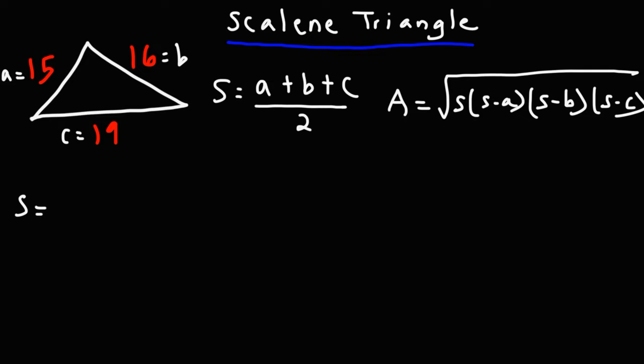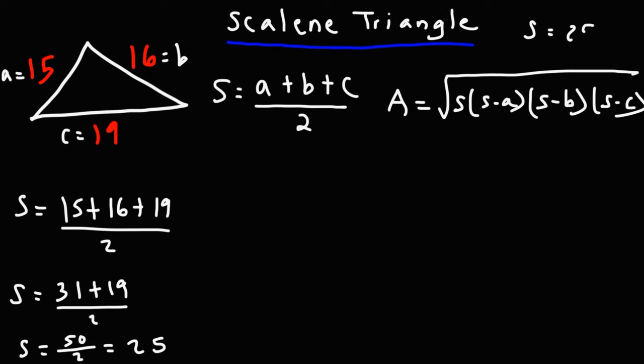Let's calculate one-half of the perimeter. So this is going to be 15 plus 16 plus 19 divided by 2. 15 plus 16 is 31. 31 plus 19 is 50. 50 divided by 2 is 25. I automatically jump to the final answer. So S is 25 in this problem.